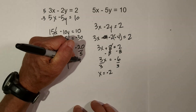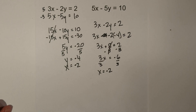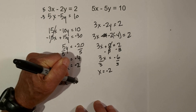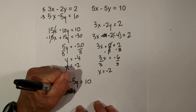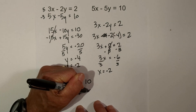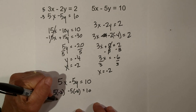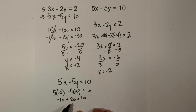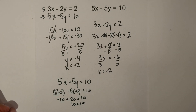Let's check our work: x equals negative 2, y equals negative 4. Plugging into 5x minus 5y equals 10: 5 times negative 2 is negative 10, and negative 5 times negative 4 is positive 20. Negative 10 plus 20 equals 10. That checks out. I hope that was helpful in solving systems of equations with elimination.